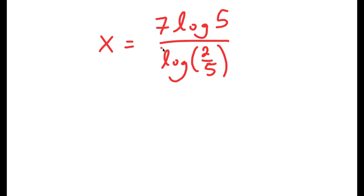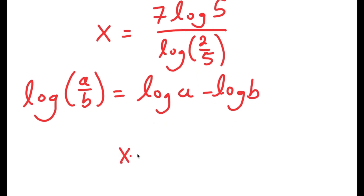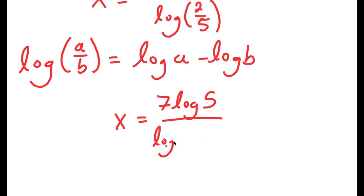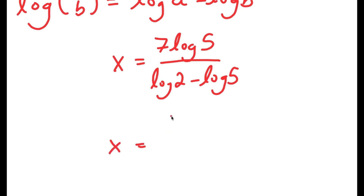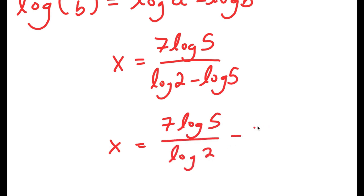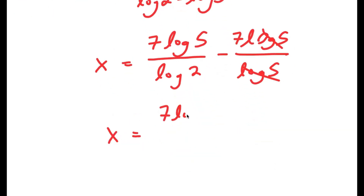This is our solution, but there is a way to simplify it more. If I have something in the form log a over b, this is equal to log a minus log b. So log 2 over 5 equals log 2 minus log 5. Substituting that in, I get 7 times log 5 over log 2 minus log 5, which simplifies further.